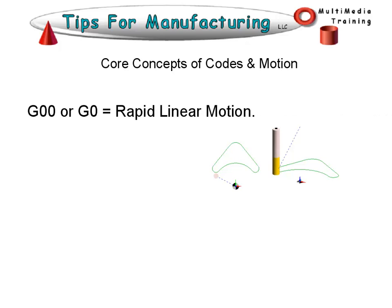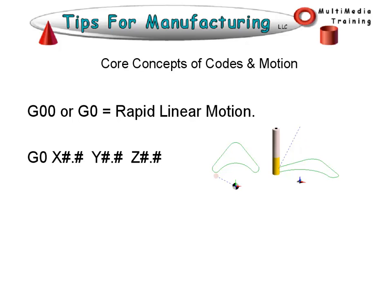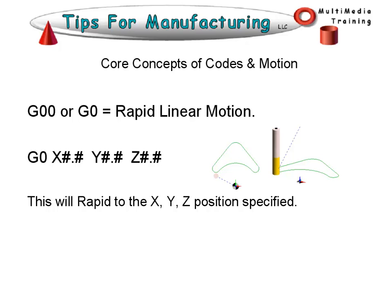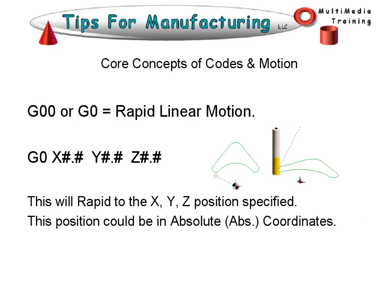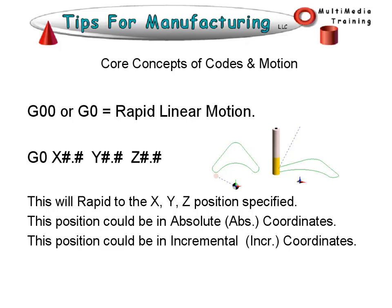Starting with G0, this is a rapid linear motion command. The general format has the G code — G0 — followed by the X position, the Y position, and the Z position. Note that it is a G0, not the letter O — it's the number 0. All of those positions may not be needed. The blue dashed line shows the rapid motion of the tool in a three-axis move. This will rapid to the XYZ position specified, which could be in absolute or incremental coordinates.